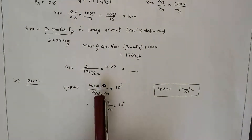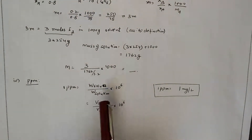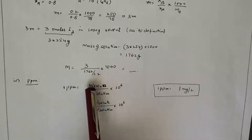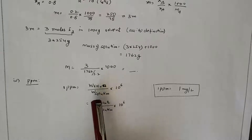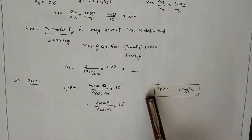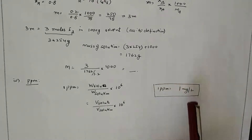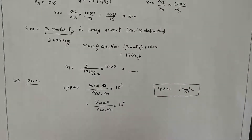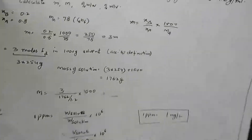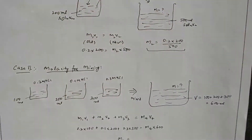PPM (parts per million) is the amount of solute in one million parts of solution, whether in solid, liquid, or gas state. It can be expressed as weight of solute per weight of solution × 10^6, or volume of solute per volume of solution × 10^6. One ppm equals one milligram per liter.